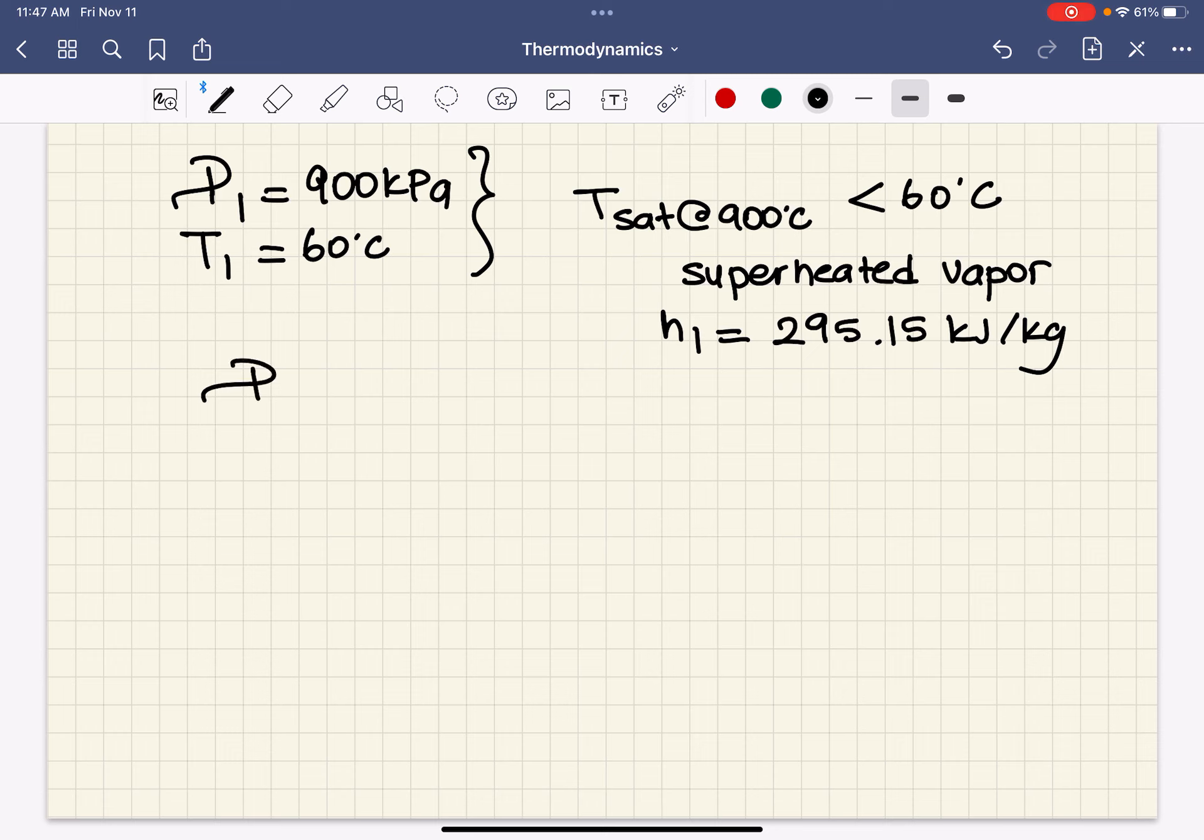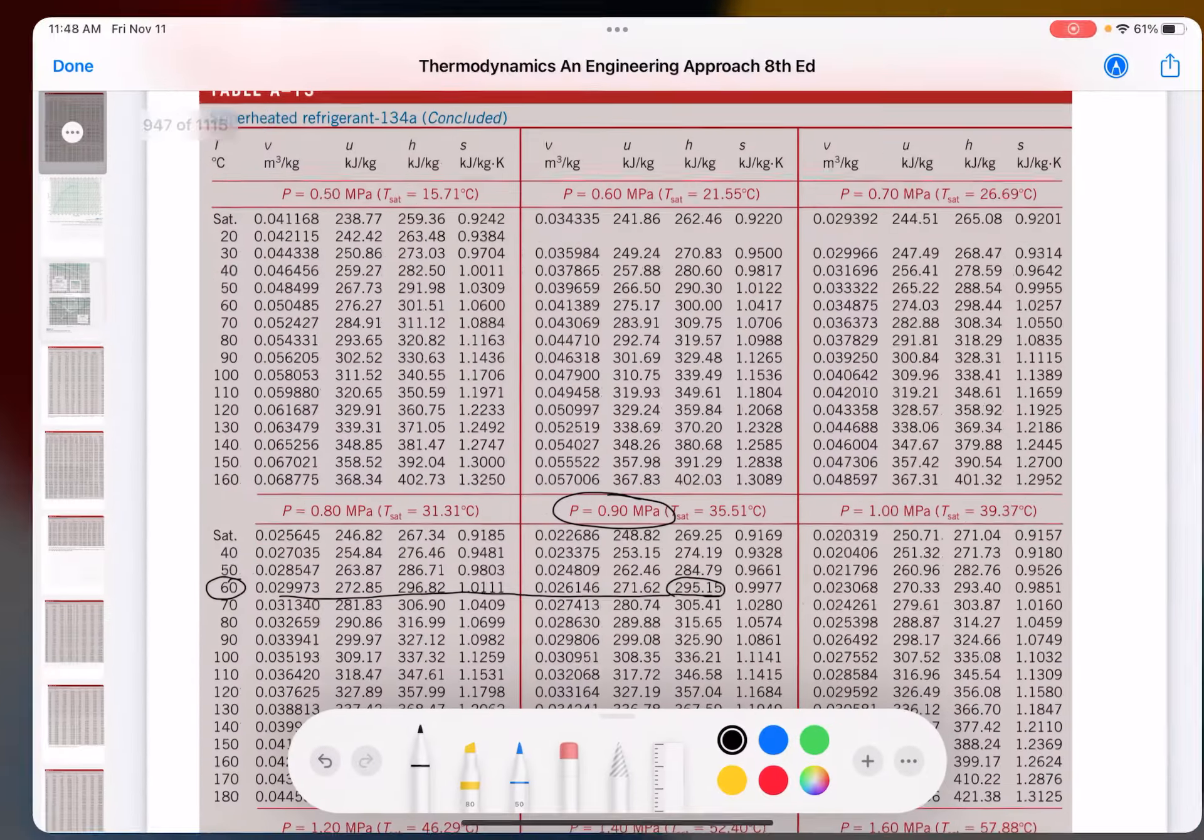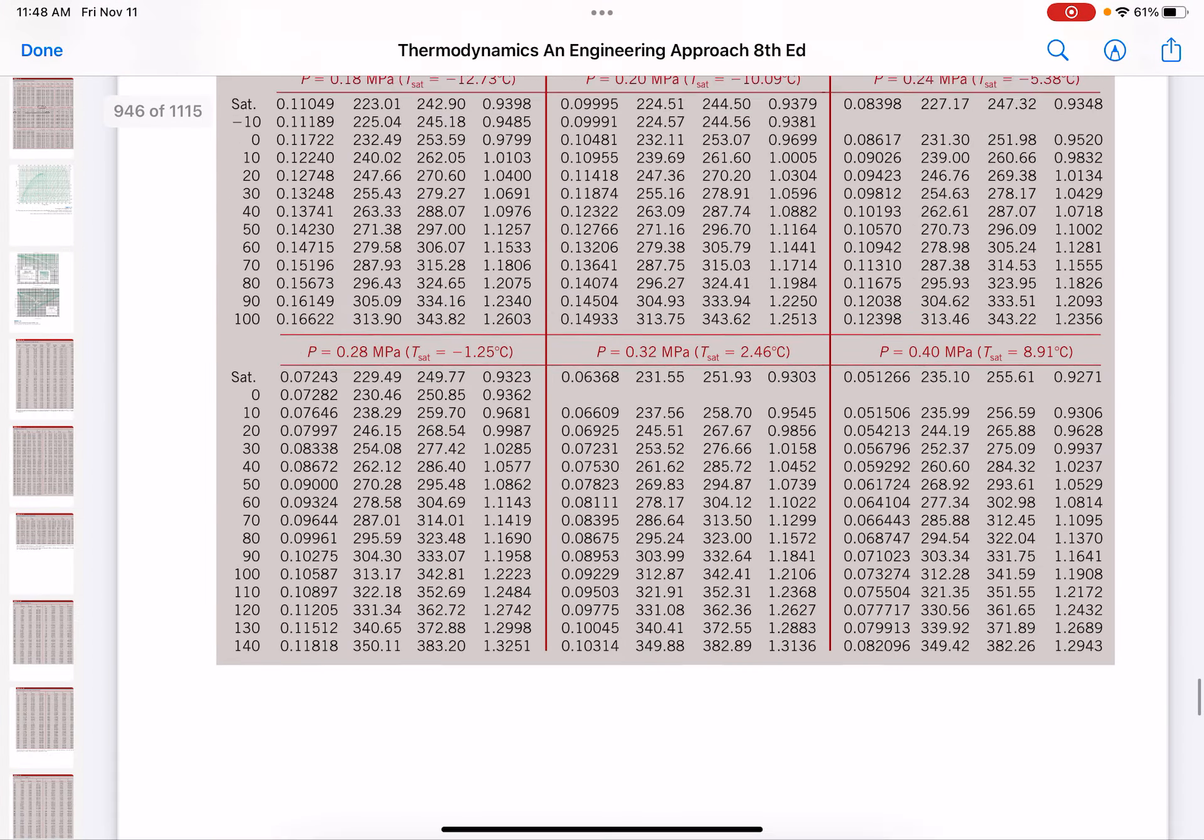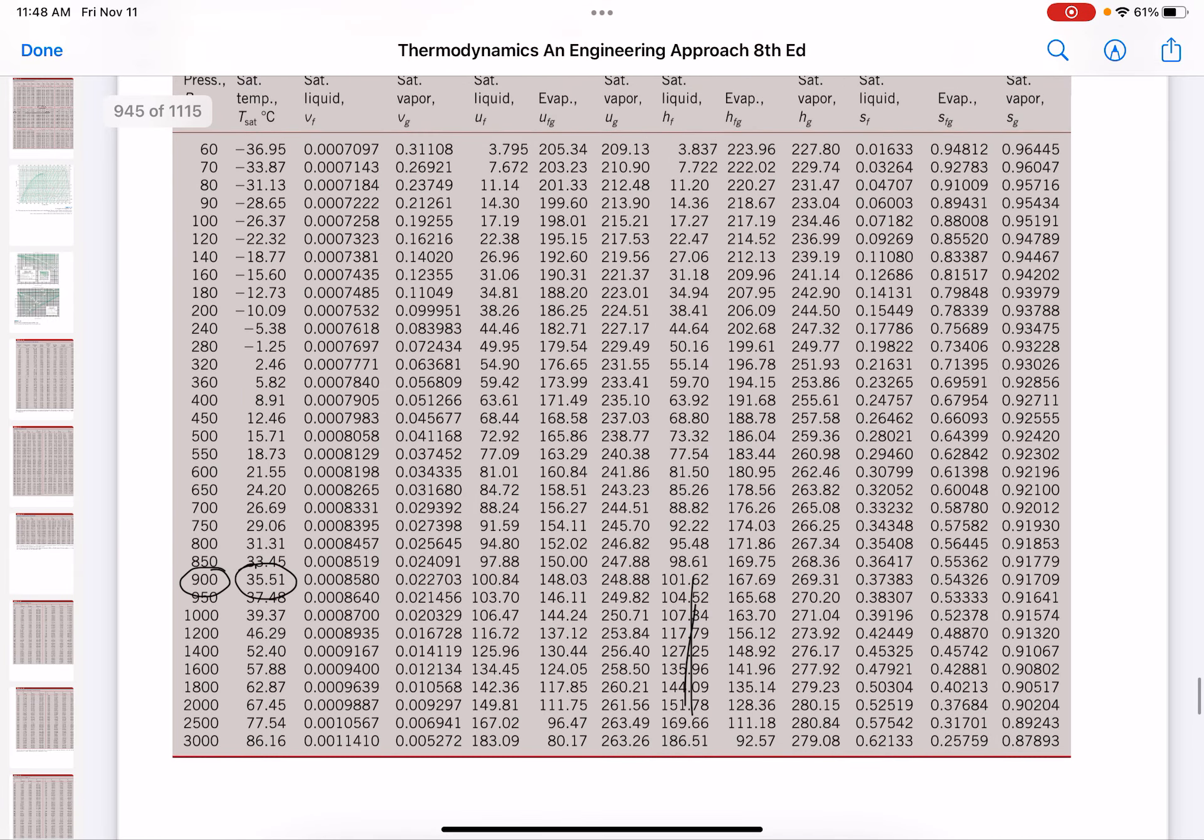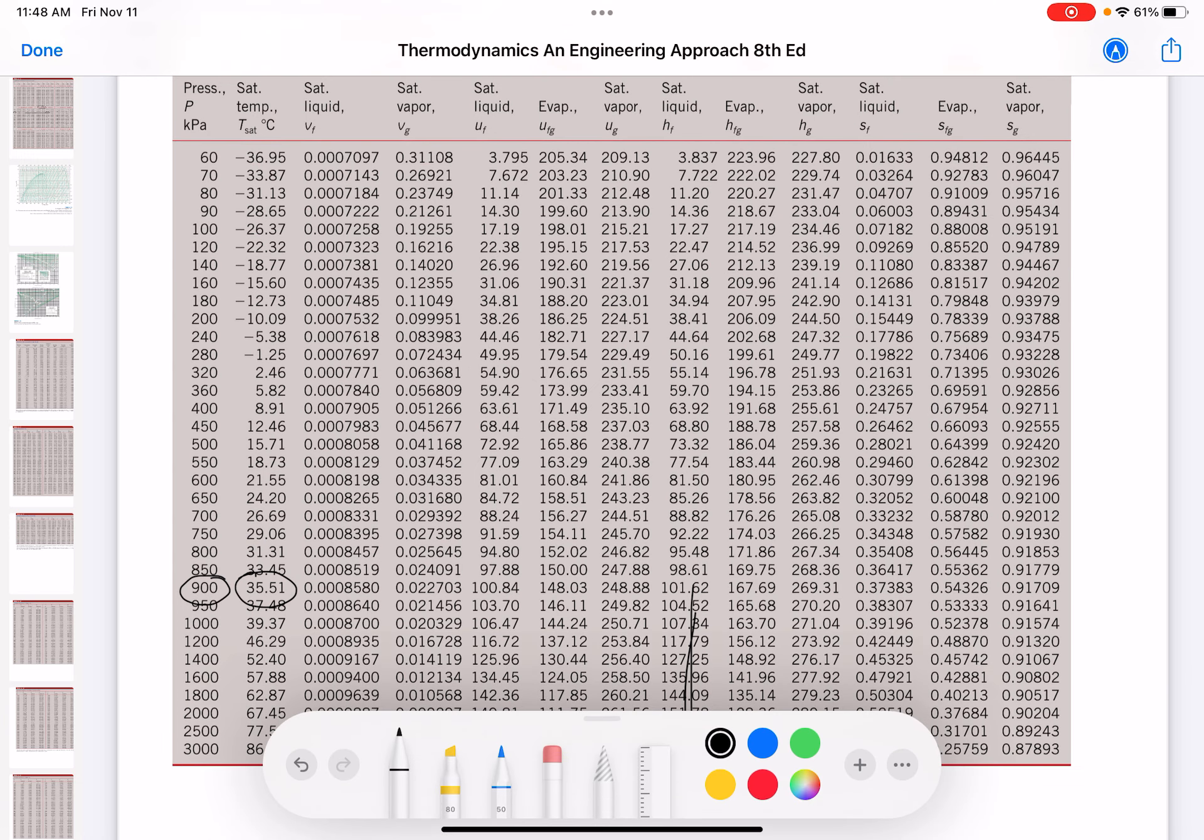At exit, we are given the pressure. Pressure is 900. We are also given actually the quality. Quality is 0. That means we have a saturated liquid. We are given it's a saturated liquid. So it is very simple. We're going to go to saturated leak refrigerant tables at that pressure. And we're going to read what h_f is. Looking at that, h_f is 101.62.